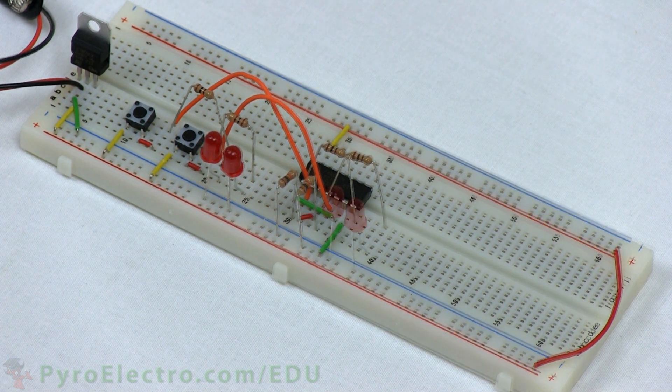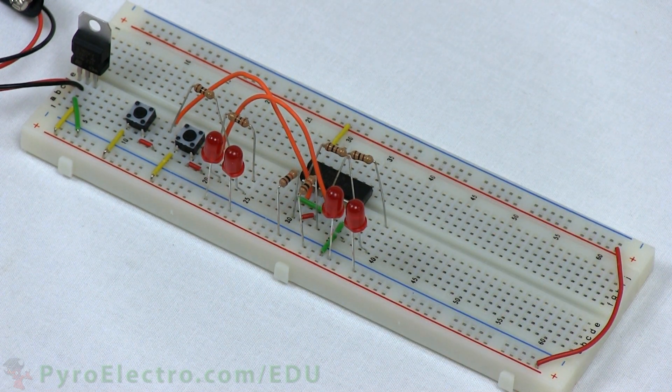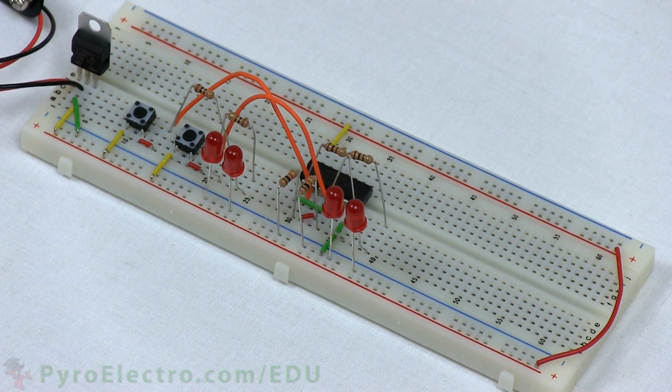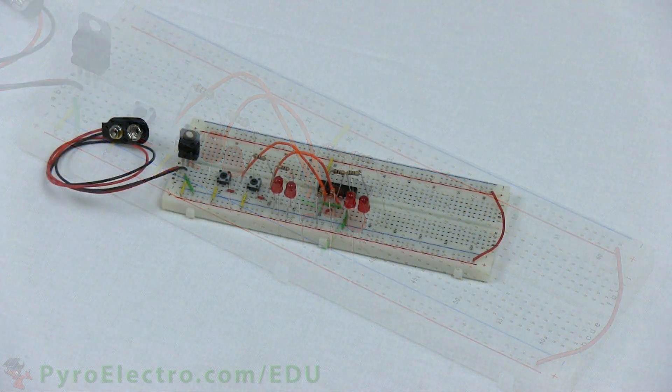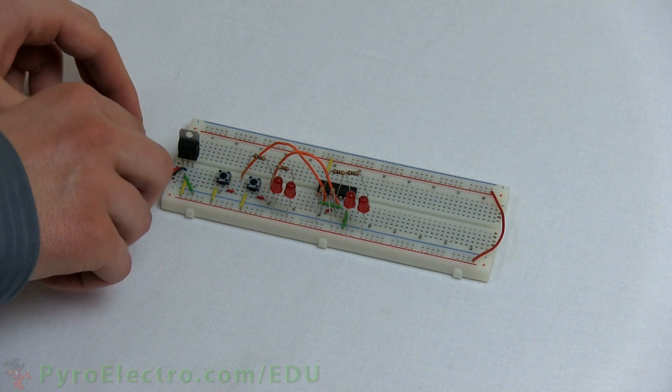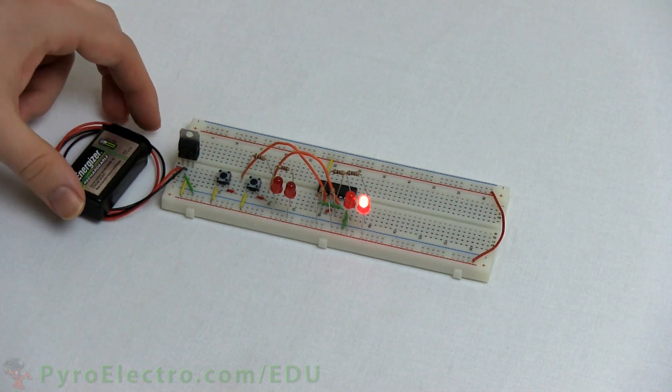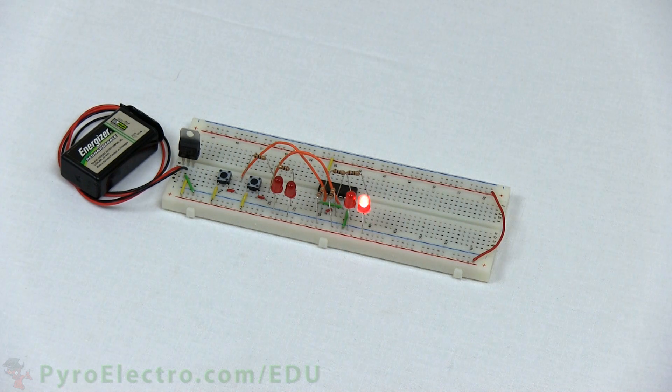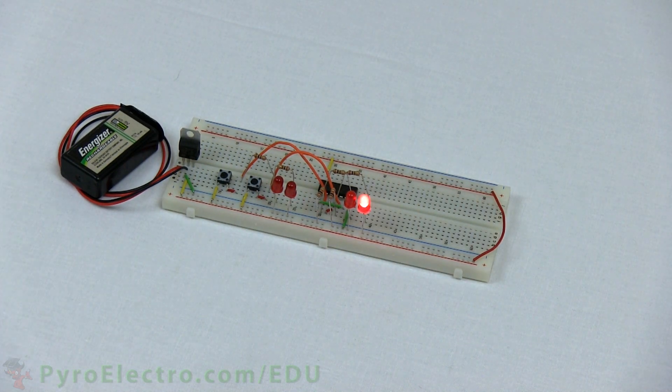Once the connections are finished, it should look like this. The left two LEDs represent the logic level of the set and reset inputs. The right two LEDs represent the Q and Q̄ outputs. So let's power it up and experiment.